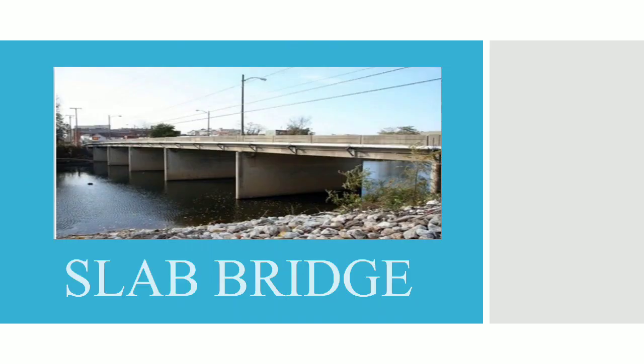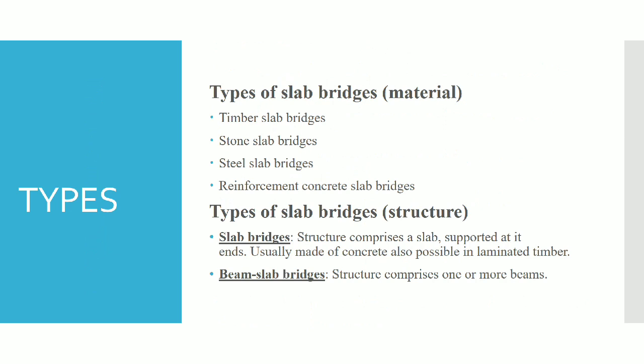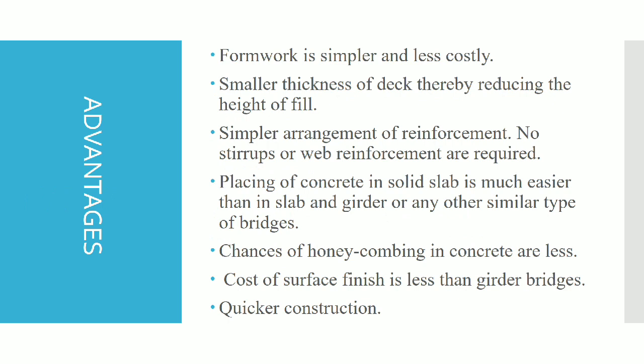Next comes the slab bridge. It is the most common type of bridge, mainly used in crossings and waterways. The slab bridge has two fundamental features compared to other bridges. Its span usually ranges from 10 to 20 meters. Types of slab bridges depend upon material — timber, stone, steel, and concrete — and upon structure: slab and beam-slab bridges.